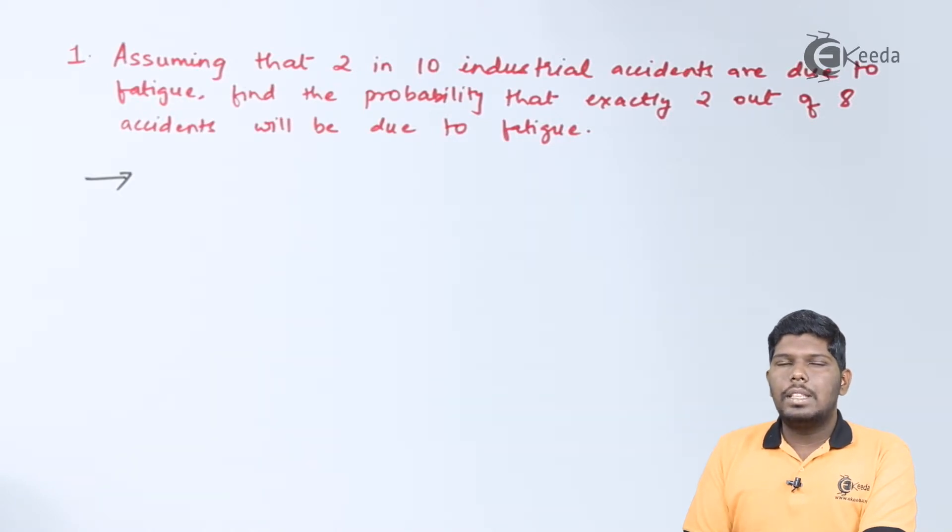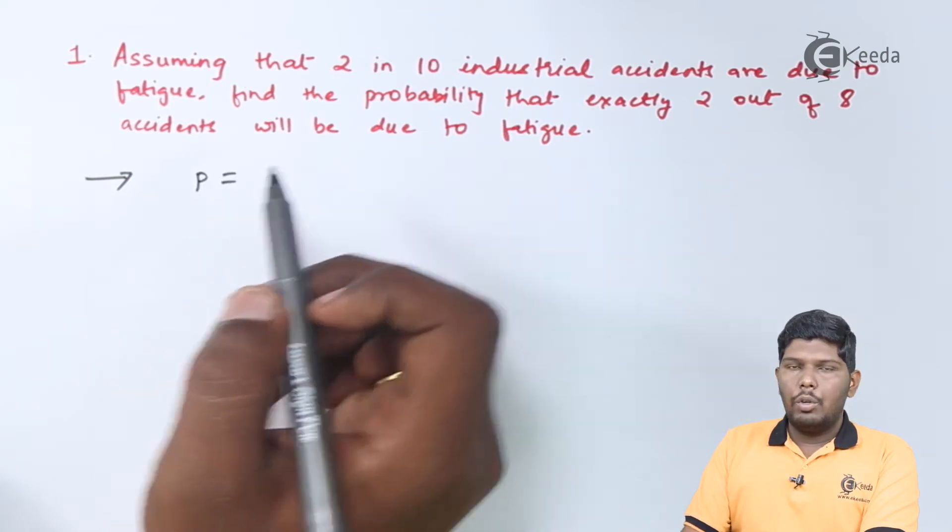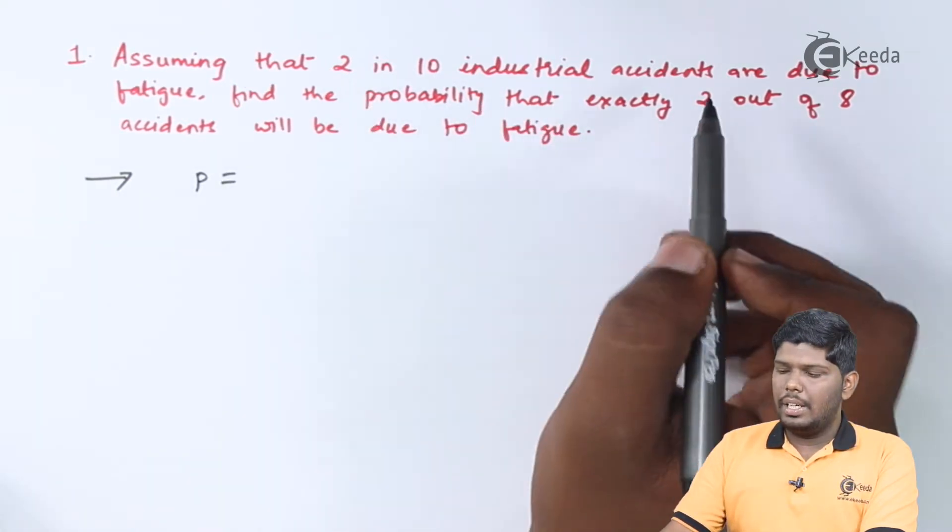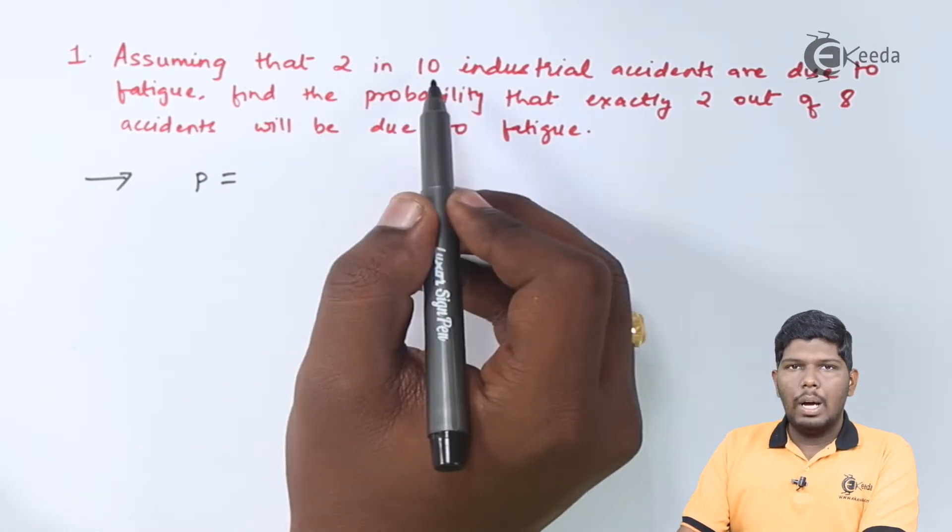Basically, p is the probability of success, n is the number of events, and r is the probability asked in the question. Here, to find the value of p, they told you that 2 in 10 industrial accidents are due to fatigue, so the formula for probability is n(A)/n(S), that gives you 2/10 which equals 0.2.